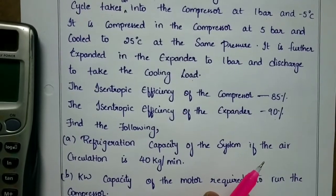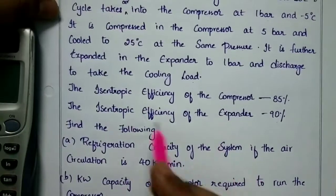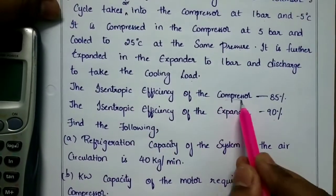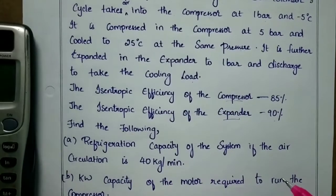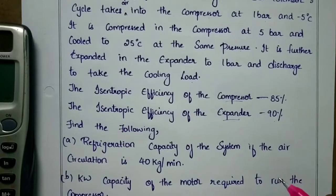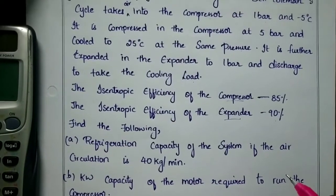The Bell-Colman cycle uses the isentropic efficiency of the compressor and the expander. That means the ideal cycle is a little different, shown in the T-S diagram.